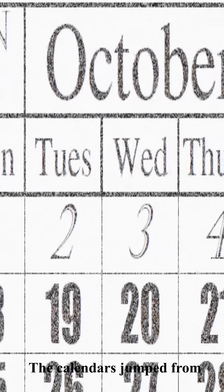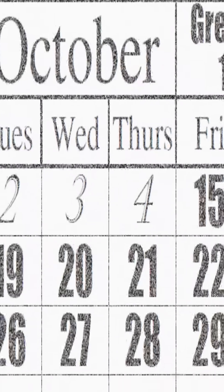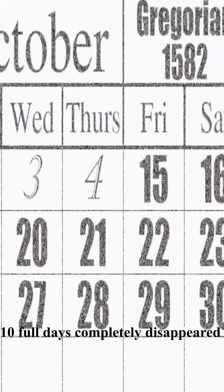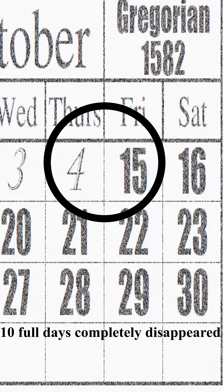What if I told you that there is a ten-day gap in the calendars? Would you believe me? In 1582, something extraordinary happened. The calendars jumped from October 4th to October 15th. As a result, ten full days completely disappeared.